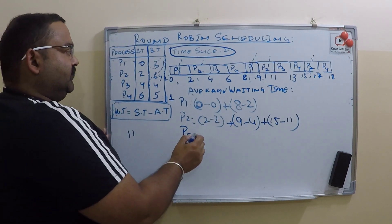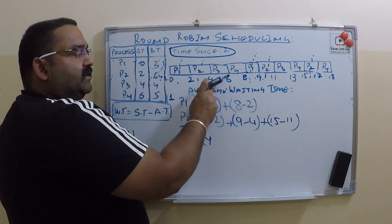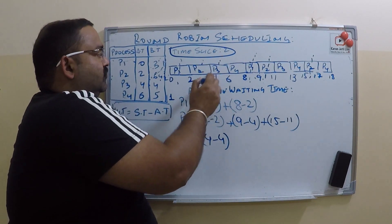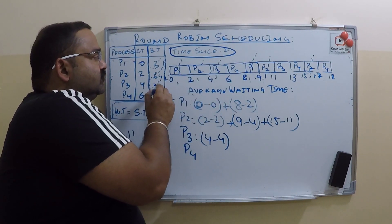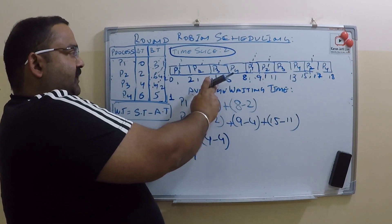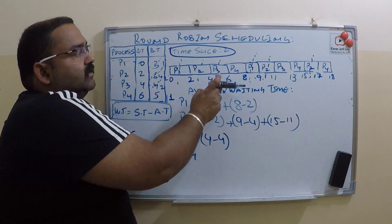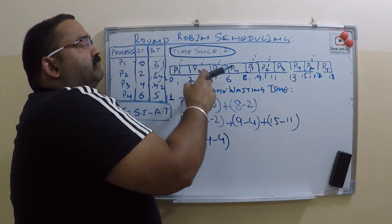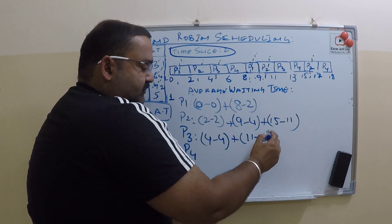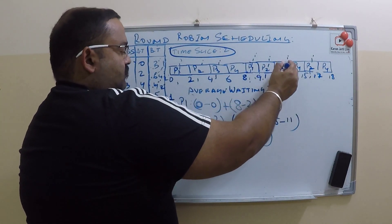Now coming to P3. P3's arrival time is 4, and its start time is also 4, so 4 minus 4 gives 0 for the first slice. After the first slot, 2 seconds were still left, so P3 goes to the wait queue at time 6. Then P3 again got the CPU at time 11, so 11 minus 6 gives 5 for the second slice. P3 finishes its execution.